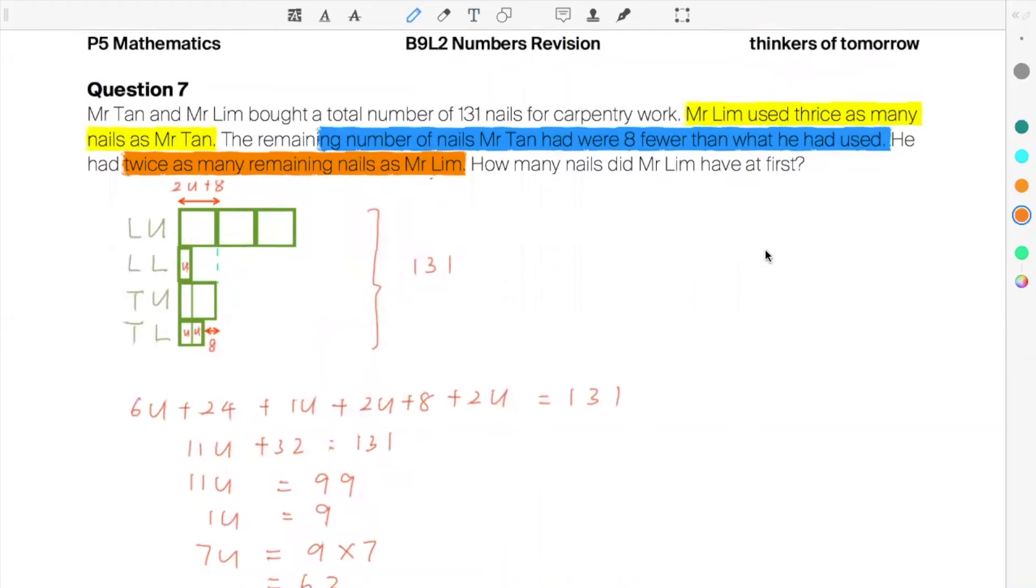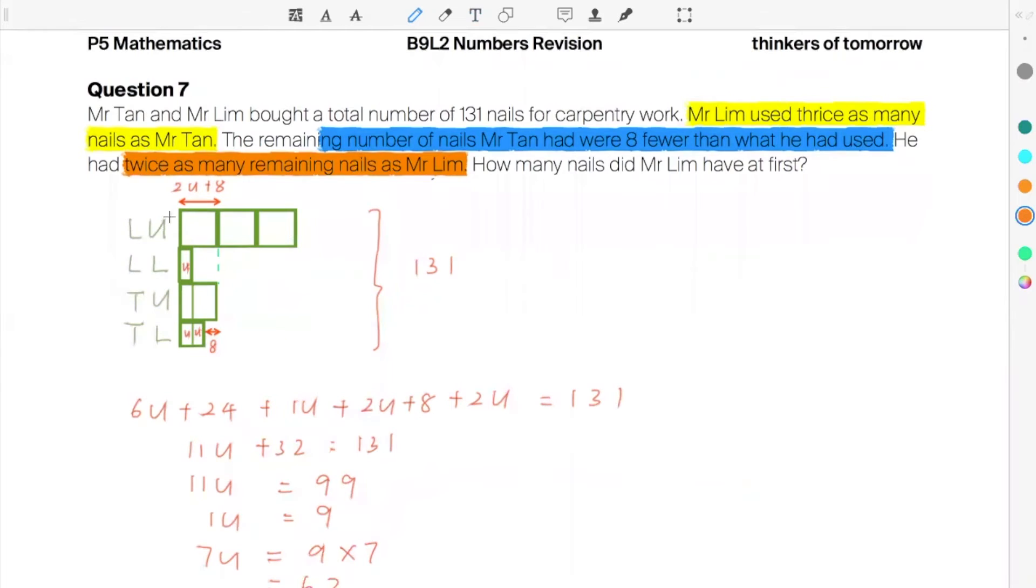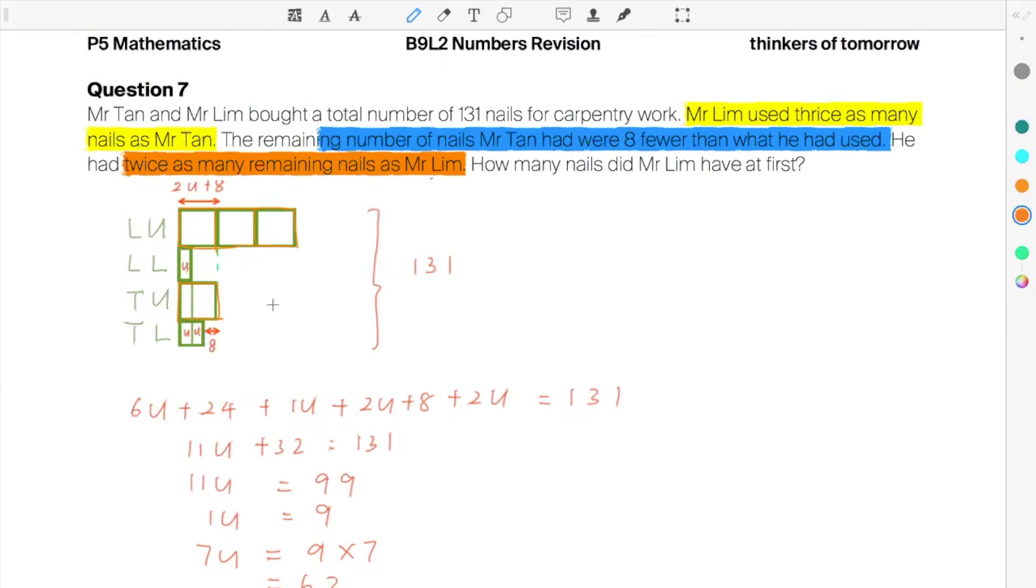So Mr. Lim used thrice as many as Mr. Tan. So my L stands for Lim, my T stands for Tan. For every three orange boxes that Mr. Lim used, Tan would use one orange box.